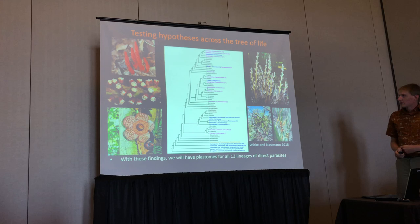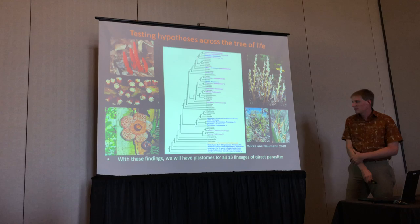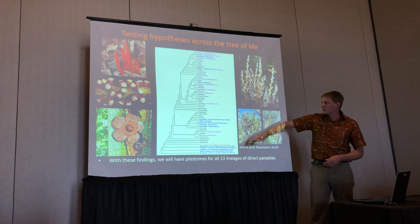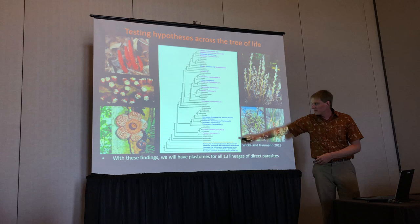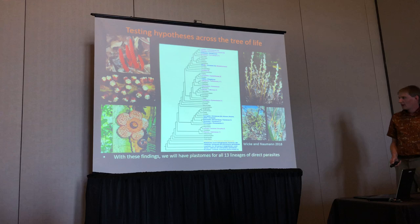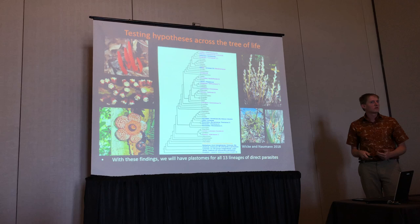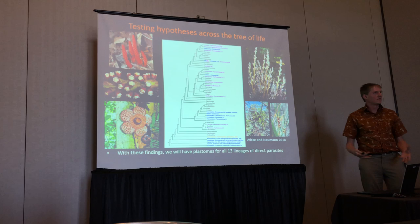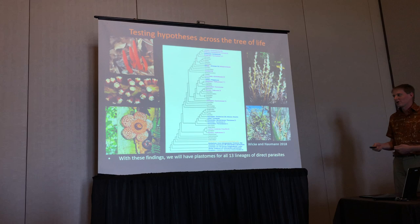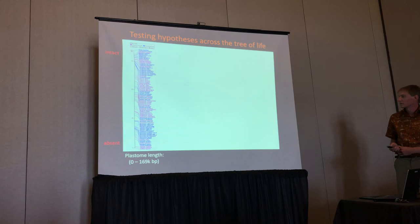Of course, to test these hypotheses, we need to look at independent origins of evolution. Here's a map showing the phylogeny of land plants, with different colors showing where heterotrophic lineages fall among that phylogeny. You can see it's well represented — these independent origins are spread across the tree of life. The purple ones are the direct parasites I'm focusing on. People have kind of chipped away at this bit by bit, and the exciting thing is that when this work is complete, we'll have data for all 13 lineages of these direct parasites and really be able to say, we've looked at all of these examples — what can that tell us?